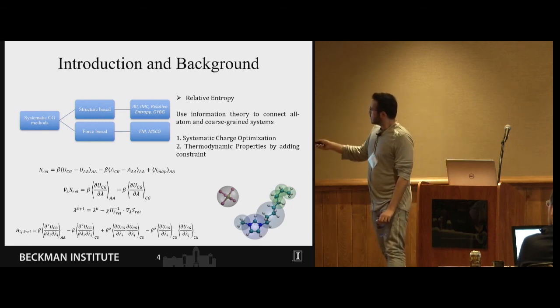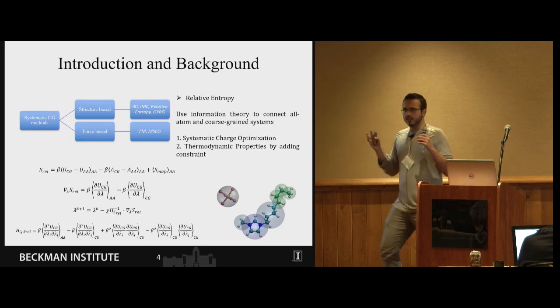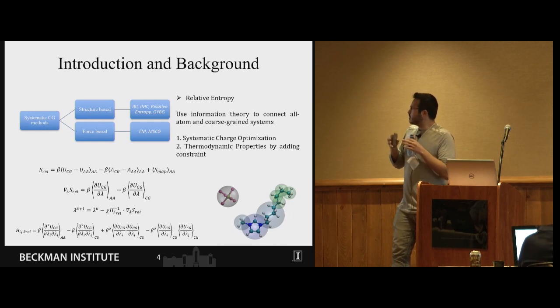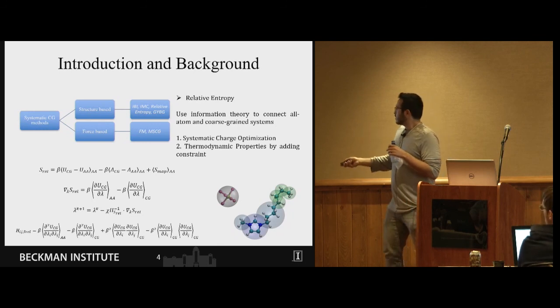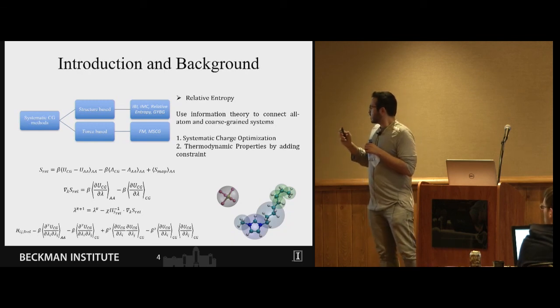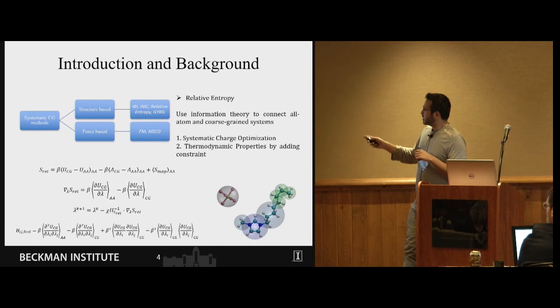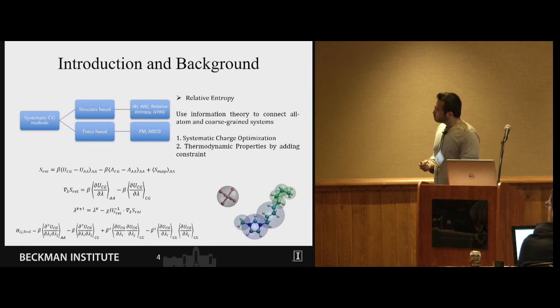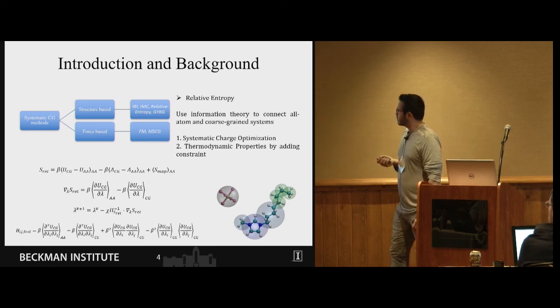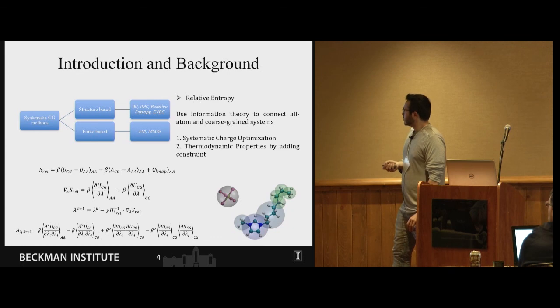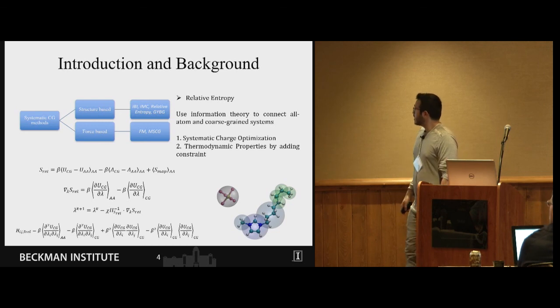For coarse-graining we lump atoms together and we expect to have similar behavior compared to all atom system. Here you can see both all atom and CG representation of both systems and number of interacting sites are reduced significantly. In this case it reduced from 50 to 9, so it is a reduction by n log n for a large system.